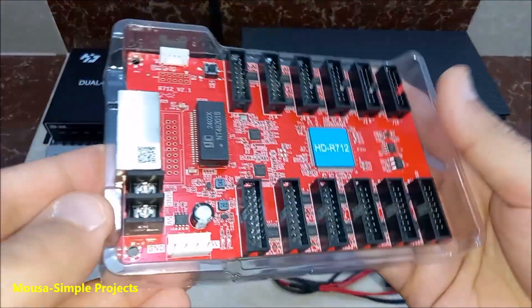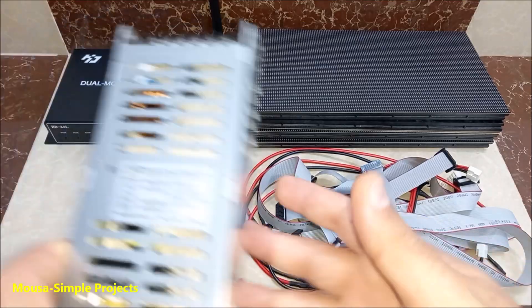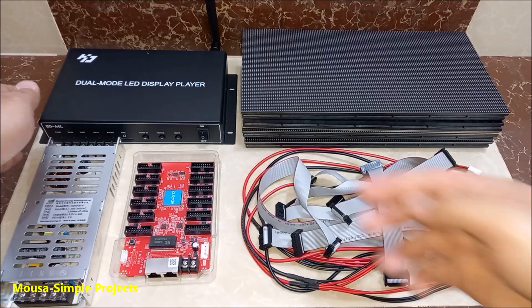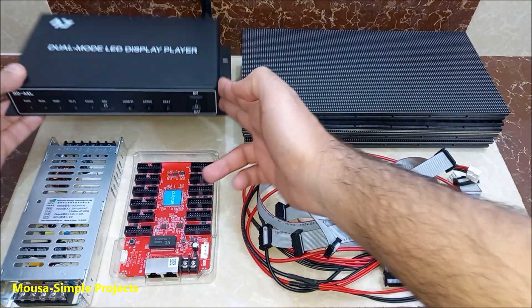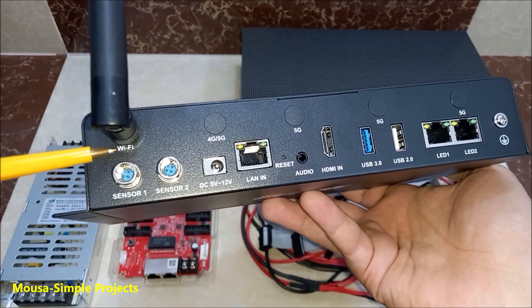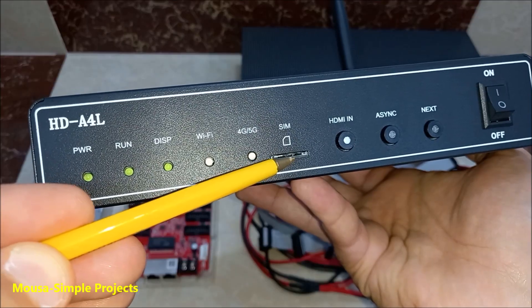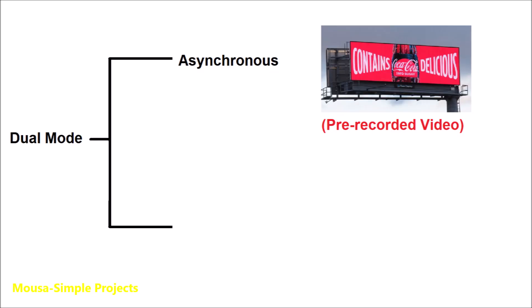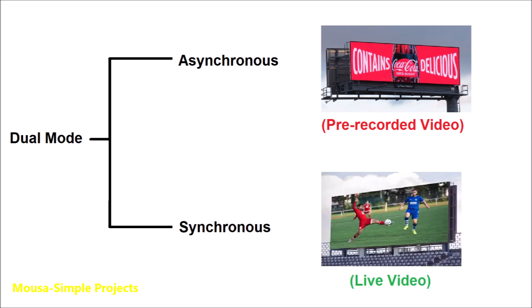The receiving card is a driver to drive the LED modules. The voltage of the DC power supply must be 5V, but the maximum output current depends on how many LED modules you have. This multimedia player receives your video and saves it inside 16 GB of memory. It has different connection methods such as Wi-Fi, Ethernet, USB, and even Internet. They call it dual mode because it can work synchronous and asynchronous. Asynchronous means you have a pre-recorded video and you want to display it repeatedly — it's usually used for advertising. Synchronous mode is live stream using HDMI input, usually used in concerts and stadiums to show video from a camera in real time.